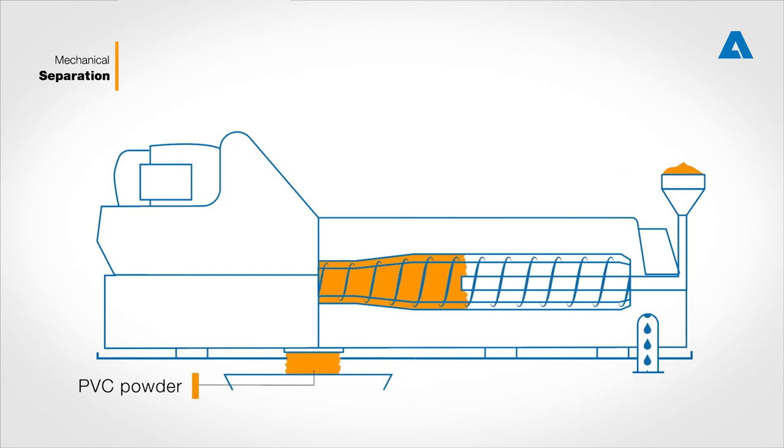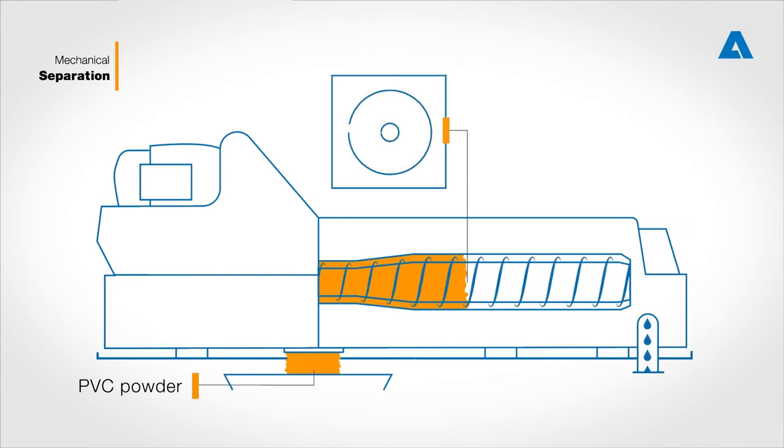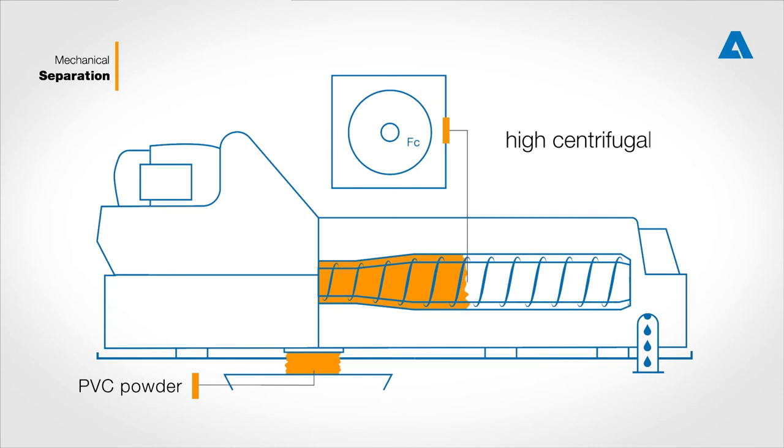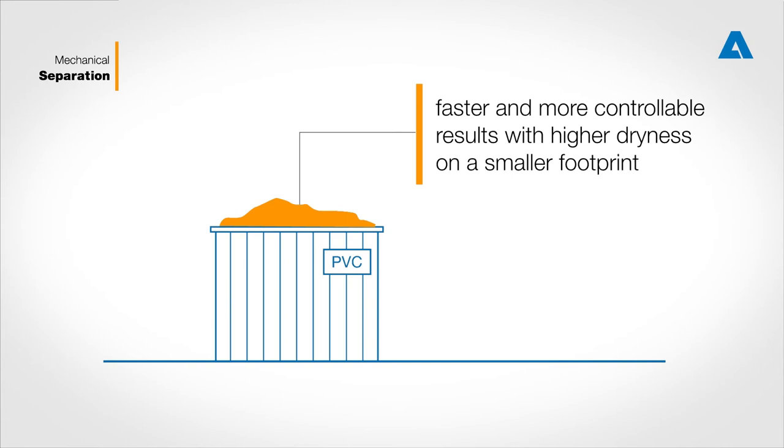Our modern decanter centrifuges increase the rate of settling through the use of continuous rotation that produces a centrifugal force of up to 4,000 Gs. This form of separation enables faster and more controllable results, with higher dryness on a smaller footprint than settling tanks.